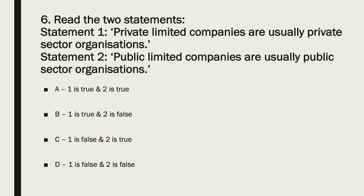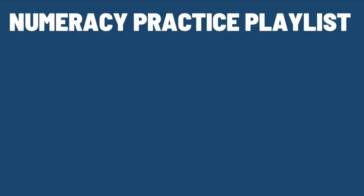The answer to question six is B — one is true, two is false. Private limited companies are usually in the private sector, so statement one is true. Statement two is there to avoid confusion between public sector organisations such as the NHS, which are financed by the government, and public limited companies, which are not usually public sector organisations. So two is false, and the answer is B.